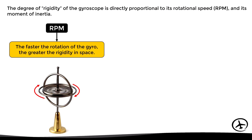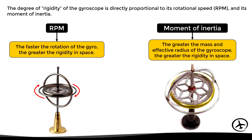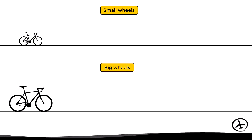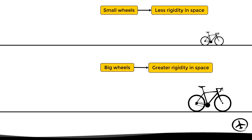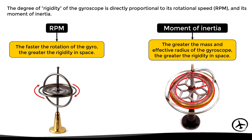The other factor that affects rigidity in space is the moment of inertia. Basically, the greater the mass and effective radius of the rotor, the greater the rigidity in space. The mass of the rotor is concentrated in the outer part, because to obtain the highest moment of inertia, the mass should be located as far away from the axis of rotation as possible. In other words, the larger and heavier the gyro rotor, the more rigidity in space it will have. This can also be experienced on a bicycle: bigger wheels present more rigidity and therefore more stability.